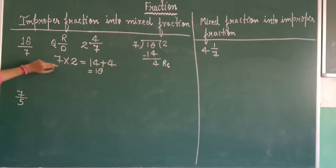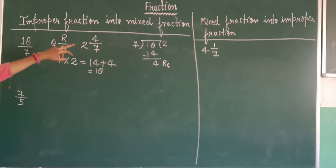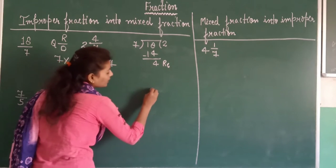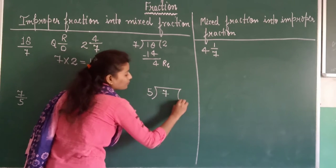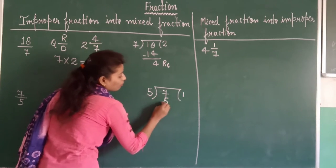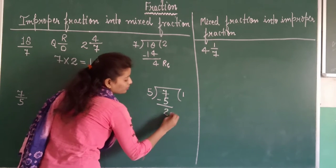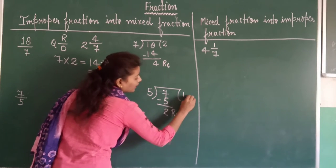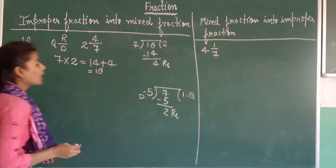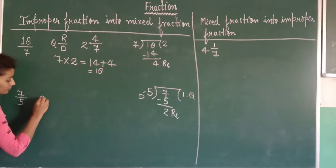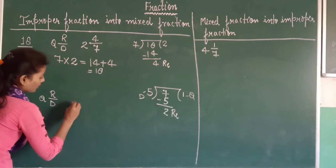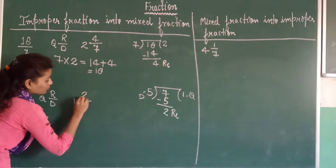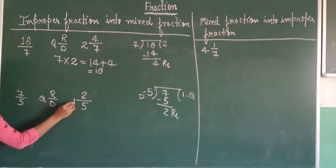Next example: 7 upon 5 — isko bhi mixed fraction mein convert karna hai. Divide karenge: 5 se 7 ko. 5 ek baar jaata hai, so quotient = 1. 7 minus 5 = 2, so remainder = 2, divisor = 5. Format hai: quotient, remainder upon divisor — yani 1 and 2/5.